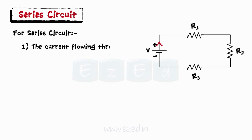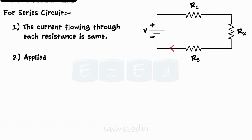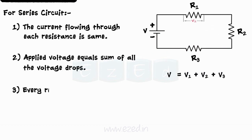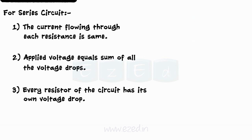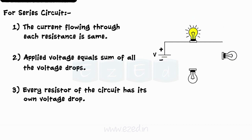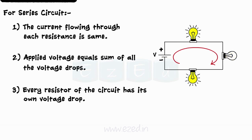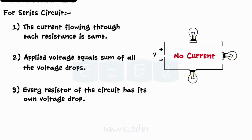For any series circuit, the current flowing through each resistance is the same. The applied voltage equals the sum of all voltage drops, and every resistor has its own voltage drop. In series connection, as soon as the voltage is applied, bulbs start to glow one by one. If any one bulb goes off, the entire circuit breaks and current does not flow.